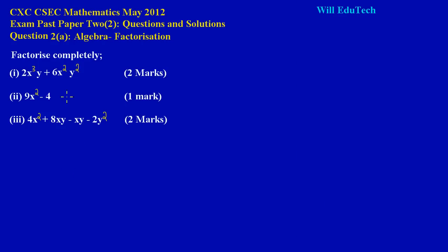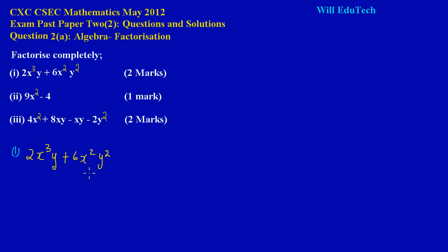Nice having you again my friends. In this video we're going to be looking at the solution to question 2, a typical algebra and factorization question on the May 2012 CSEC math exam paper 2. They have given us 2x³ multiplied by y plus 6x² multiplied by y², and they're asking us to factorize this completely.